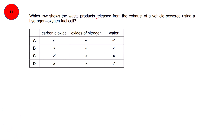Which row shows the waste products released from the exhaust of vehicles powered using a hydrogen-oxygen fuel cell? This question is from chapter 5, Chemical Energetics. In this cell, hydrogen gas reacts with oxygen to produce water and electricity. The only chemical product produced is water, so there is no carbon dioxide, no oxides of nitrogen. Water is there, so the right option is D.